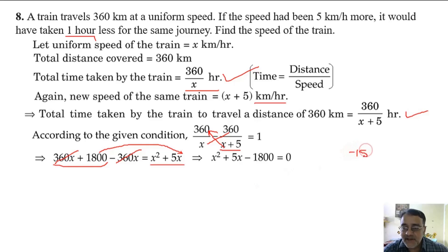What is the product here? Minus 1800. What is the sum? Plus 5. We have to split 1800 into 2 factors such that the difference is 5. 45 and 40. Sum's sign goes on the larger number, other gets opposite sign. So we split plus 5x as plus 45x minus 40x.